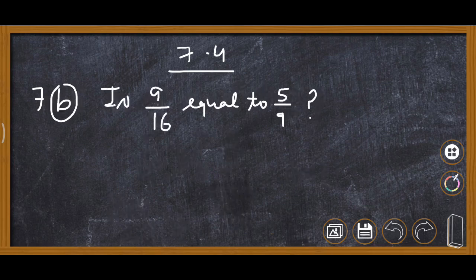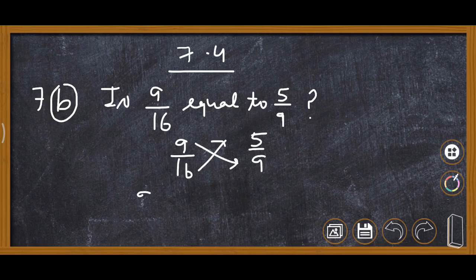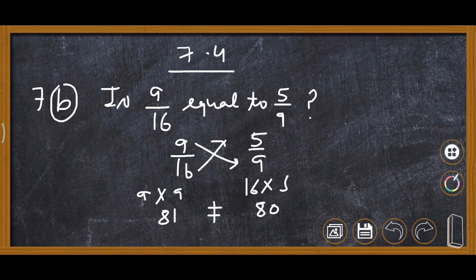Now Question 7b: is 9 upon 16 equal to 5 upon 9 or not? We write 9 upon 16 and 5 upon 9, then cross multiply. 9 into 9 is 81, and 16 into 5 is 80. Both sides are not equal, so the answer is no — 9 upon 16 is not equal to 5 upon 9.